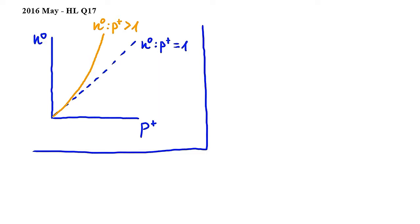In this question we have to decide what can be deduced from the neutron number versus proton number graph for stable nuclides. I have drawn this graph below.